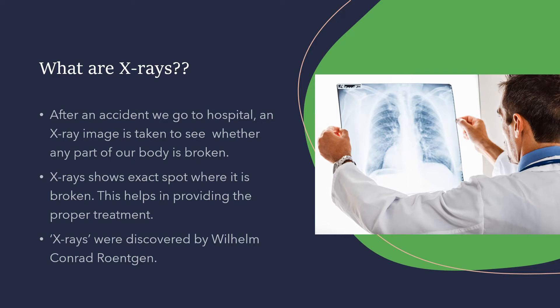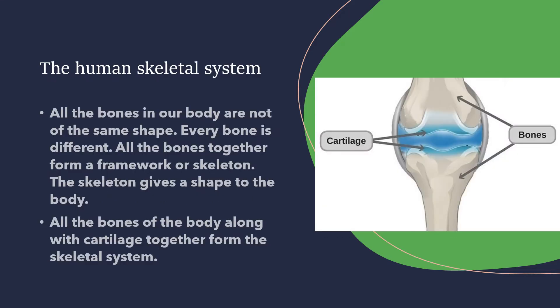Human skeletal system — all the bones in our body are not of the same shape; every bone is different. All the bones together form a framework or skeleton. The skeleton gives a shape to the body.